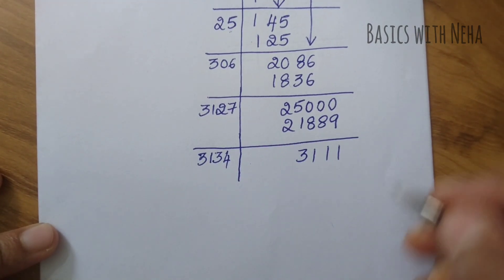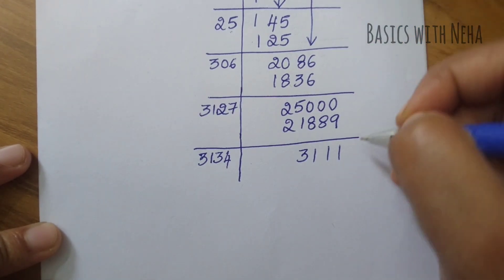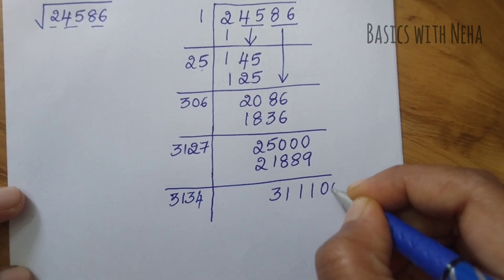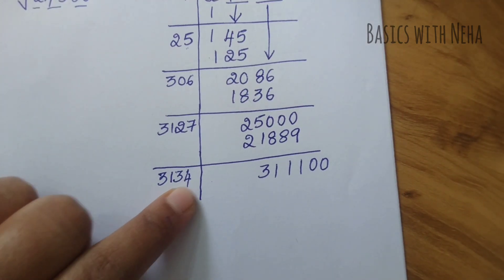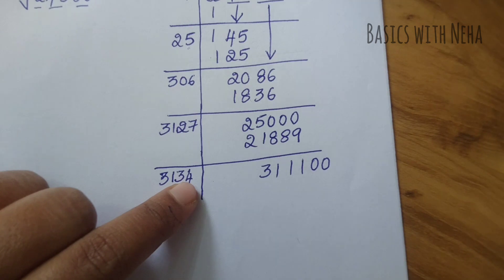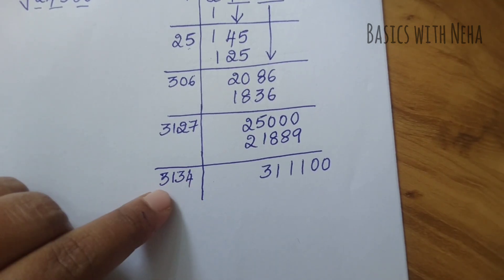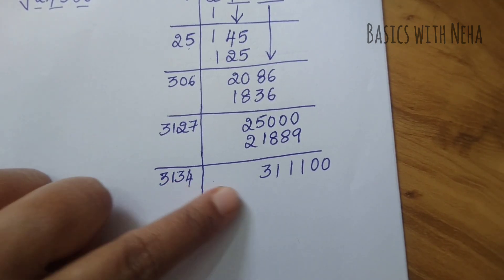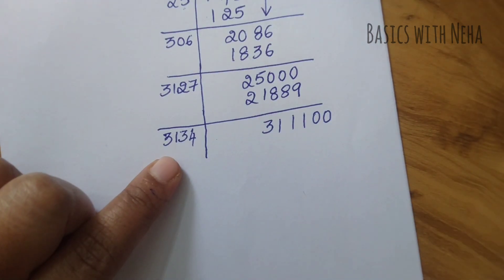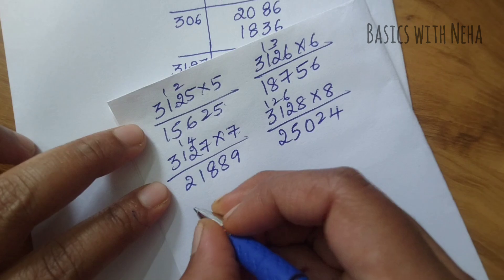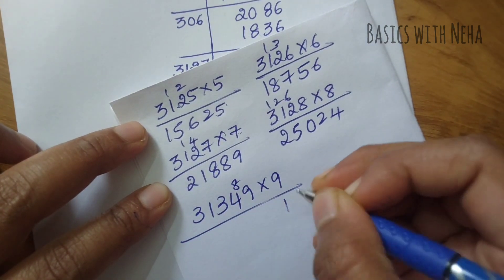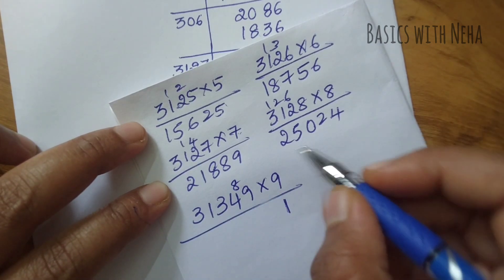Again I have to take two zeros down because we are doing the square root in groups. It's clear that 31340 times 10 will be 313400. This is just 311100. If I go with 9, that is 31349 into 9.